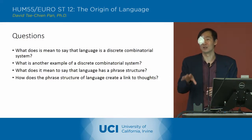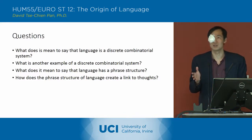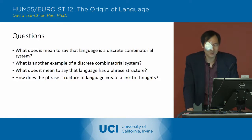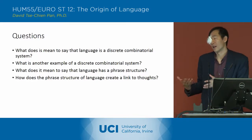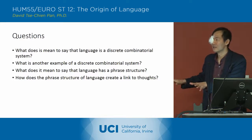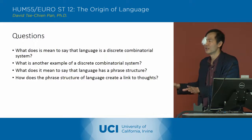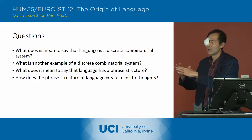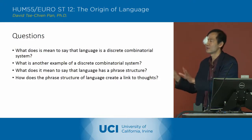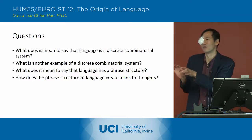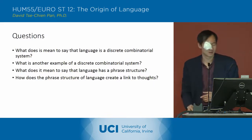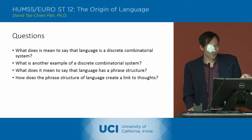DNA is another example of a discrete combinatorial system. What does it mean to say that language has a phrase structure? Basically, the different elements of a sentence — even if there are lots of separate words — can all be grouped together into phrases that simplify the entire structure of the sentence. Most sentences have this two-part structure: a noun phrase and a verb phrase.